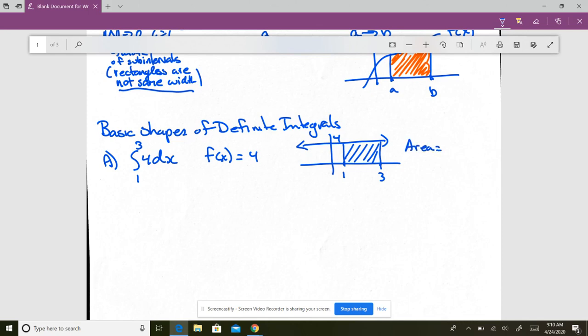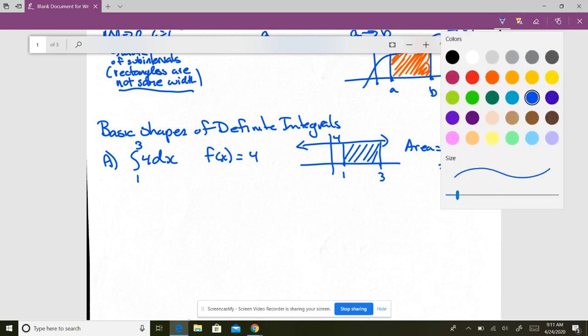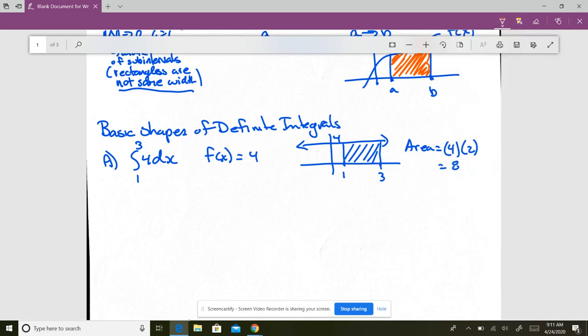That is a rectangle. So it's going to be the height, 4, times the width, which is 2, which is 8. So what that means is, this integral, the value of this integral here, is equal to 8.